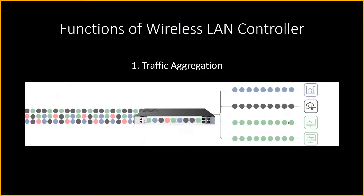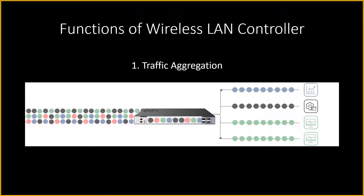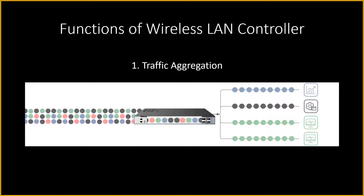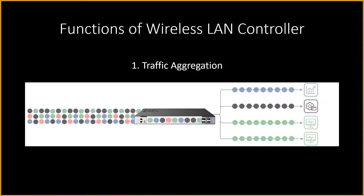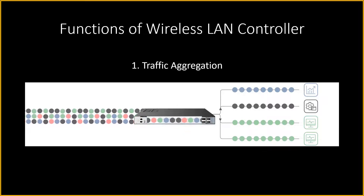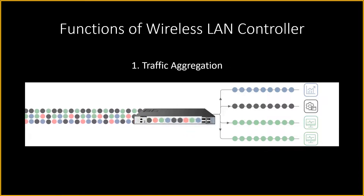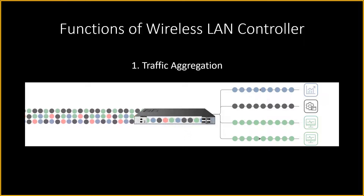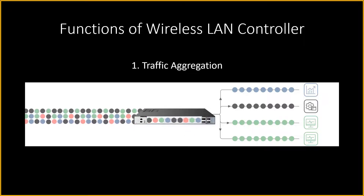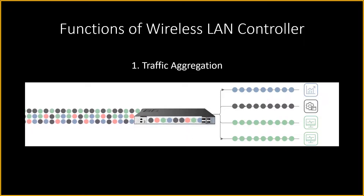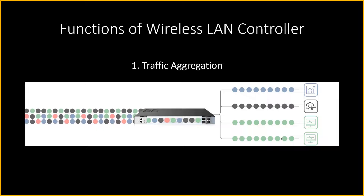What are the functions of a wireless LAN controller? The major function is to maintain the configuration of wireless access points, but it carries out multiple other functionalities. Number one is traffic aggregation. This function is not always performed inside the WLC — it will depend on the network architecture used. When all traffic from wireless devices is routed via the controller, you can use it to encode it or divide it so that it sends to different networks, or filter it to prioritize according to established quality policies.